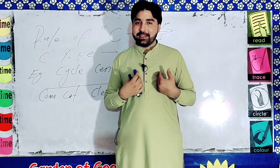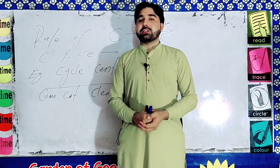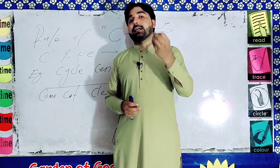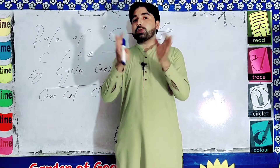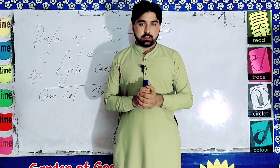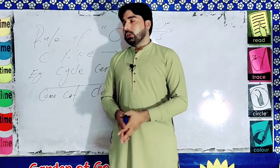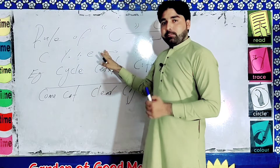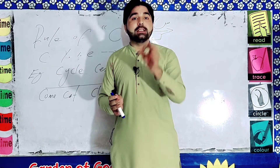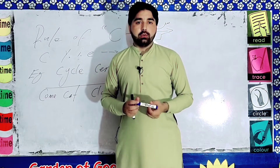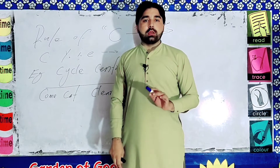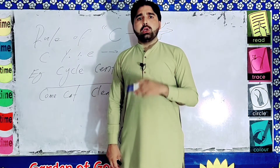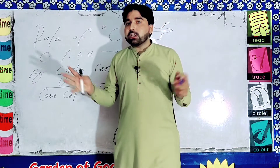Assalamu alaikum everyone, this is Yasser sir. Today we are going to learn a very important topic — we are going to clear the confusions. Today we are going to learn about the pronunciations. Here is a rule of C. What is the rule of C? When C comes, it has two sounds, two pronunciations: one is 'sir' (S sound) and the second is 'ka' (K sound). We confuse about where to pronounce 'ka' and where to pronounce 'sir'.